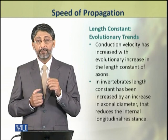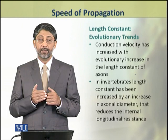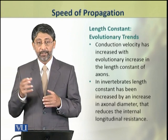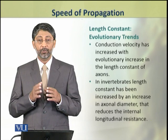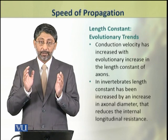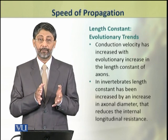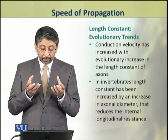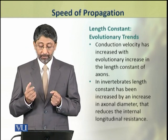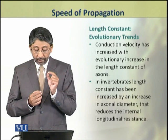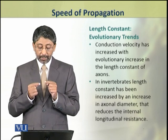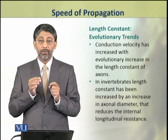During the process of evolution, the length constant was given great importance. This is why we see an evolutionary trend towards increasing the diameter and thickness of neurons. Increasing the diameter actually reduced the internal longitudinal resistance to ionic flow.